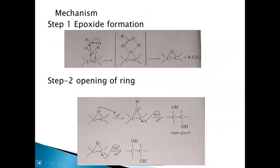Now let's see the mechanism in detail. The first step is formation of an epoxide. The alkene is electron-rich, so it acts as a nucleophile. This pi bond attacks the oxygen of RCO3H, and electron transfer takes place, resulting in the formation of a transition state which leads to the epoxide. RCO2H is seen as a side product.